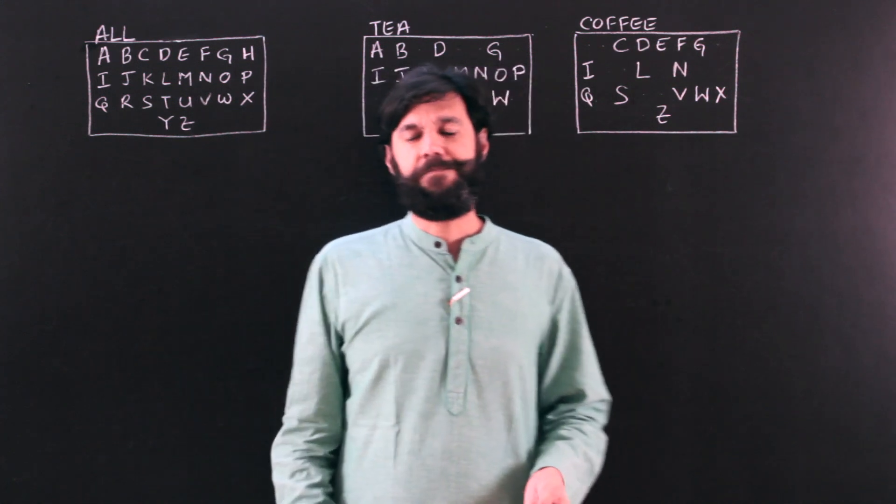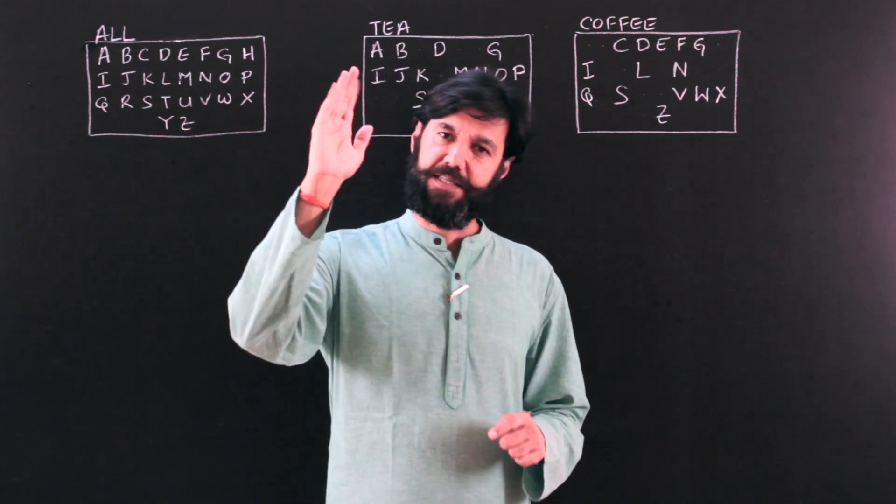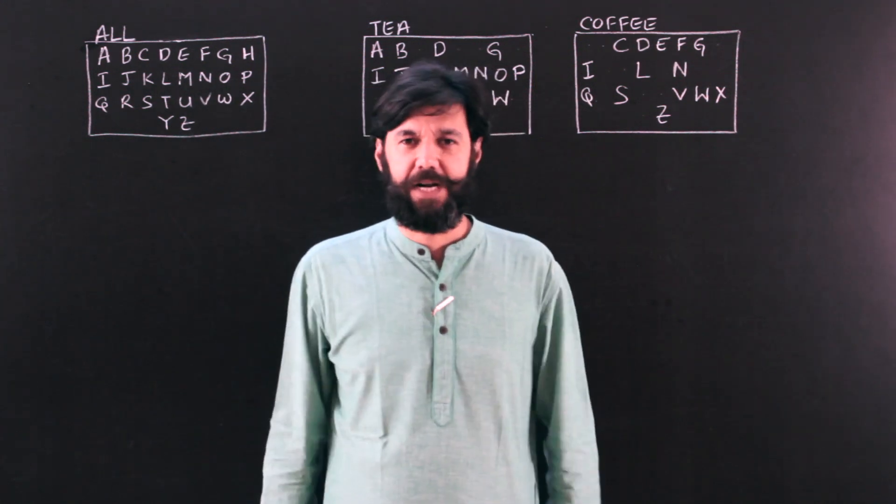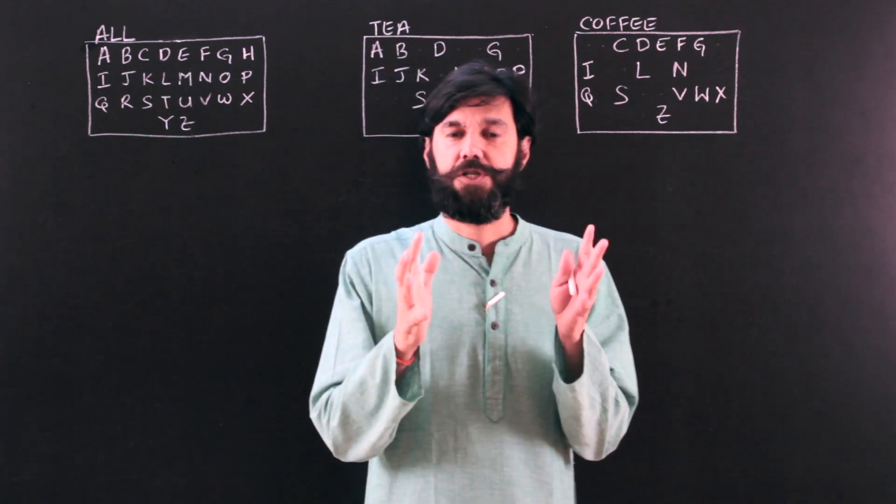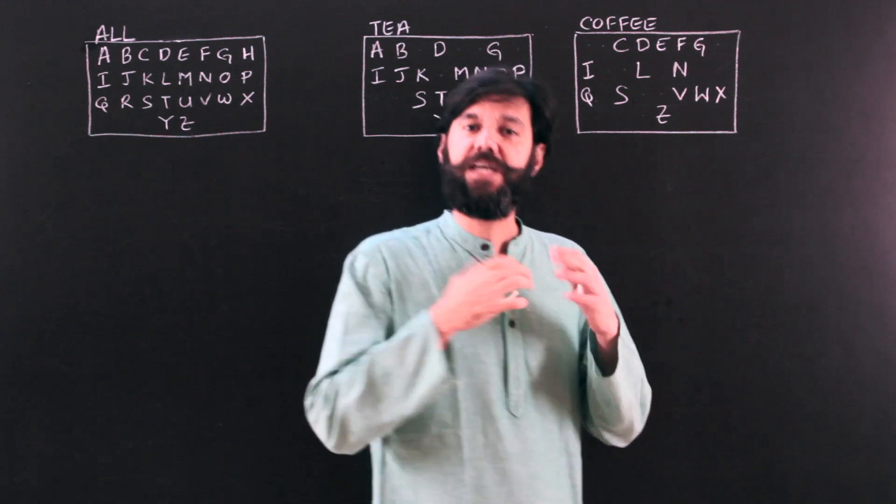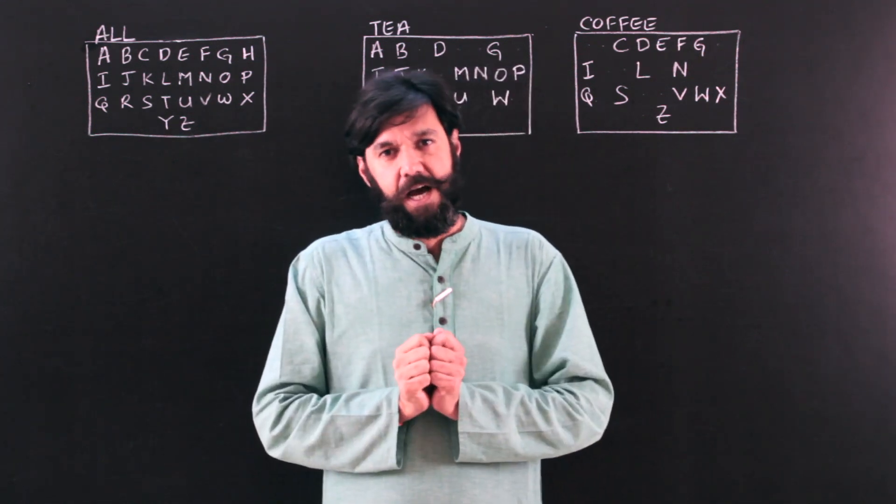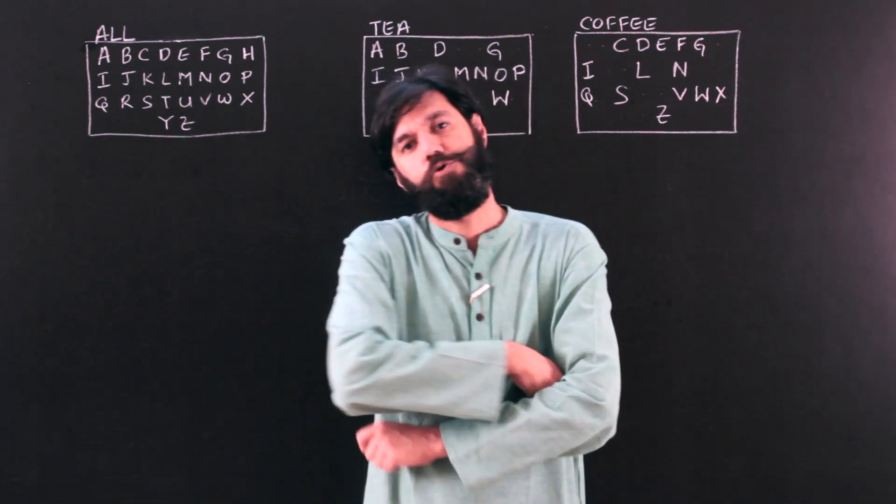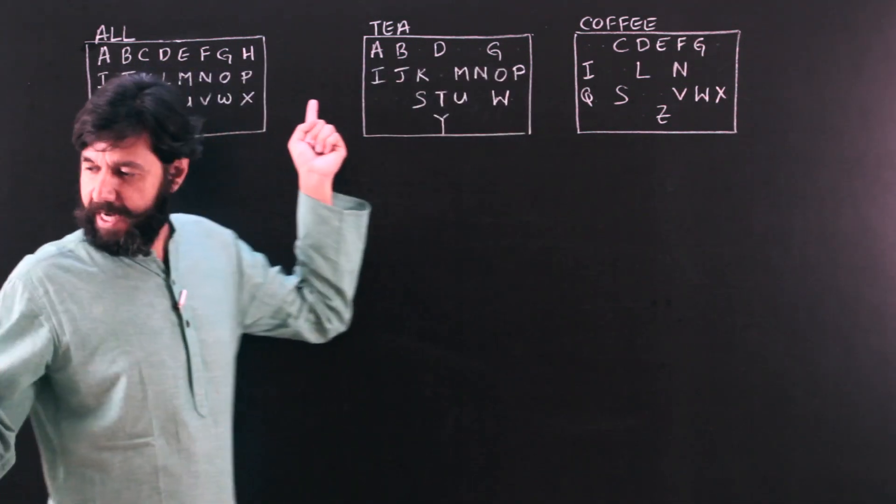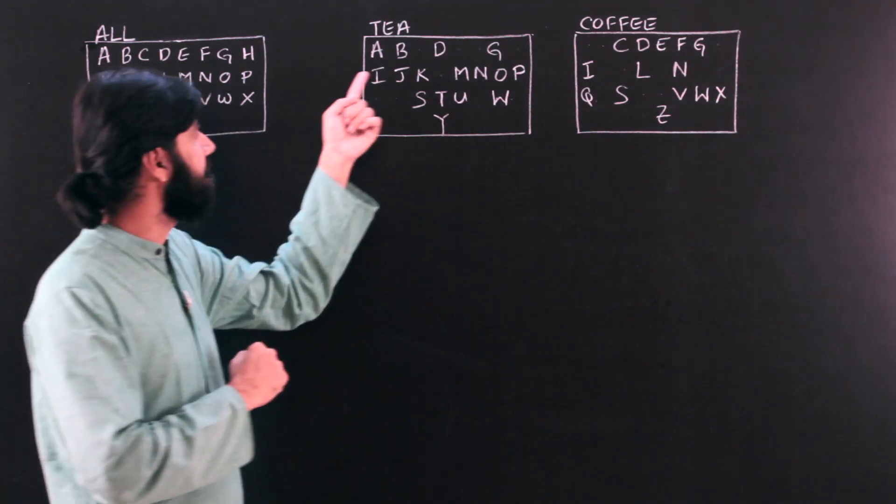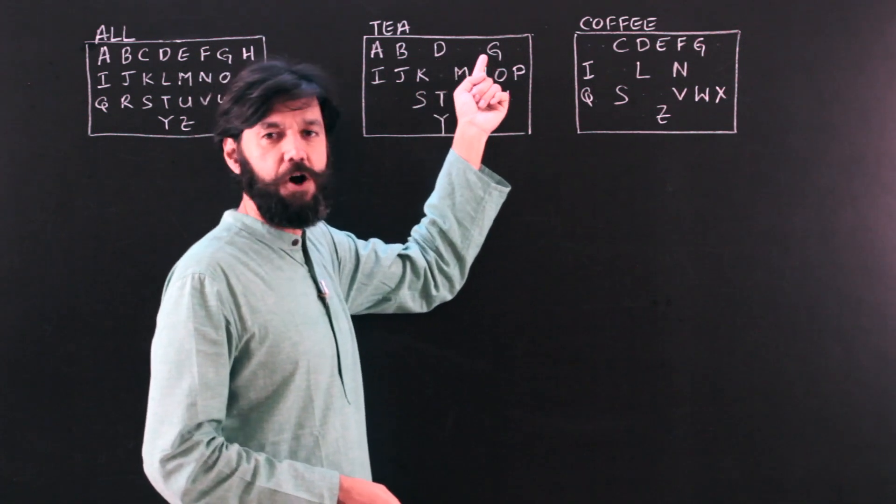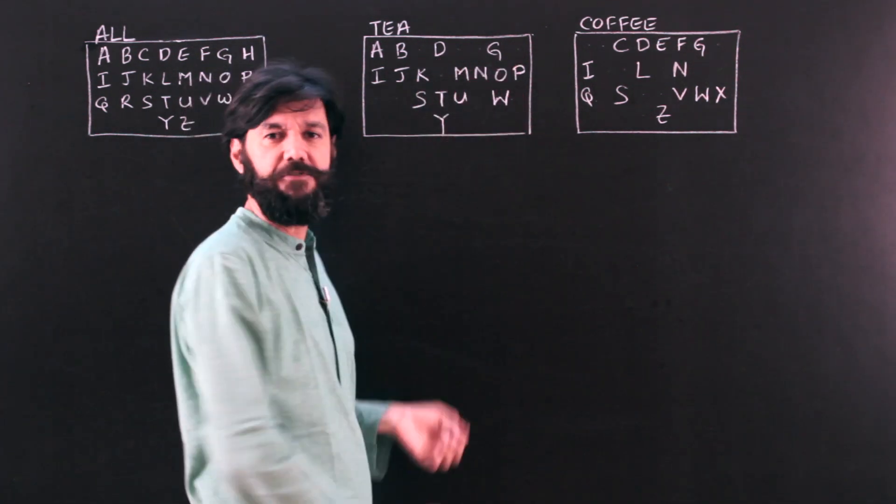So I ask them a question: how many of you drink tea, raise your hands and keep them raised. I want to count, I want to make a note of who drinks tea. This is the criteria that I was talking about. Satisfying a criteria - all those students who have raised their hand, they satisfy the criteria that they drink tea. The ones who have not raised the hand, they do not drink tea. So I start listing down. A drinks tea, I note his name down, B drinks tea, C doesn't, D, E, F do not, G and so on. I make a list of all those who drink tea.